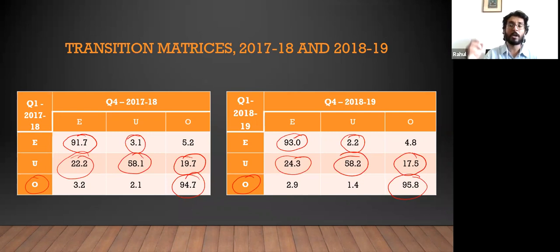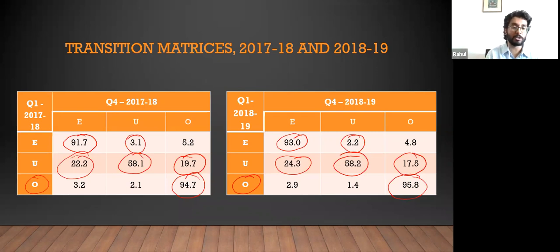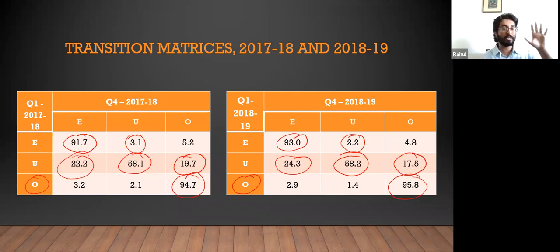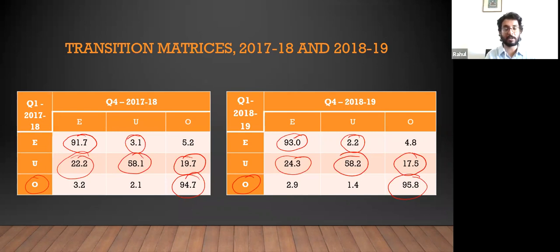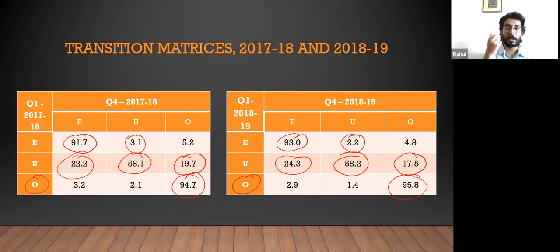The unemployment rate only measures those who are unemployed, not those who have left the labor force. So the reduction in unemployment rate over these years will mask significant weaknesses where many people are unable to find jobs and are just leaving. We are trying to decompose changes in the unemployment rate using these transition probabilities, and we feel this may be one of the first estimates of the discouraged worker effect for India.